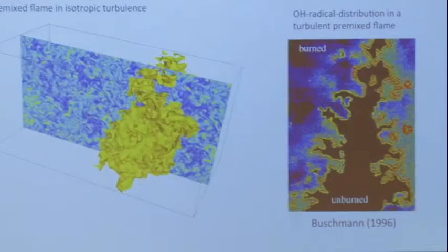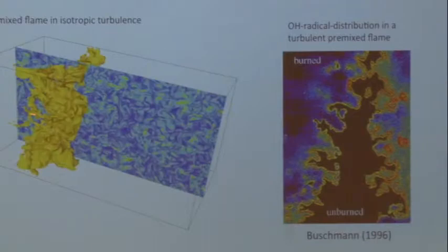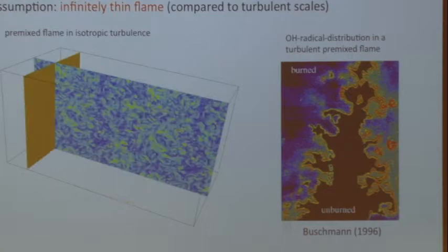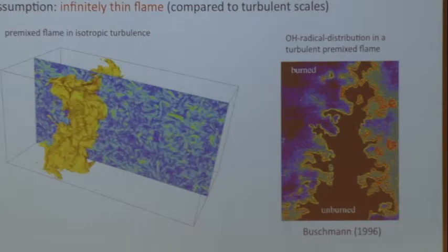In the corrugated flamelet regime, the flame still propagates with a laminar burning velocity. The influence of turbulence is just to make the flame surface much larger. The reaction rate is proportional to flame surface times burning velocity — so if the surface area is very large, the mass burning rate per unit time is very large. That's how we think about modeling this regime.